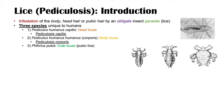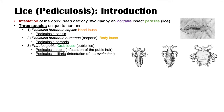Having Pthirus pubis can lead to a couple of different conditions. The first is pediculosis pubis, which is infestation of the pubic hair. The second, interestingly, is pediculosis ciliaris, which is an infestation of the eyelashes — so this type of louse can actually infest the eyelashes of an infected individual.